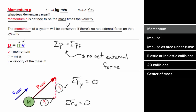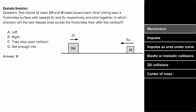So what does an example problem involving momentum look like? Let's say two blocks of mass 3m and m head toward each other, sliding over a frictionless surface with speeds 2v and 5v respectively. After the collision, they stick together. Which direction will the two masses head after the collision?